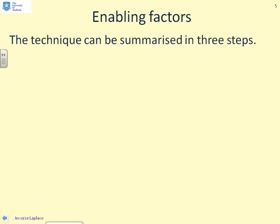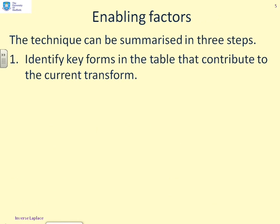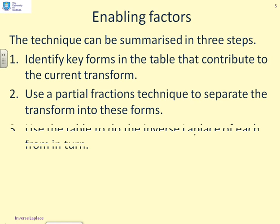So what do we need in order for this technique to work? The first thing we need to be able to do is identify the key forms in the table that contribute to the current transform. That's just familiarity with the table itself, and it wasn't very big. Next, we need to use a partial fraction technique to separate the existing transform into the types of form which are in our table. We simply use the table to do the inverse Laplace transform of each of the structures once we've done partial fractions.